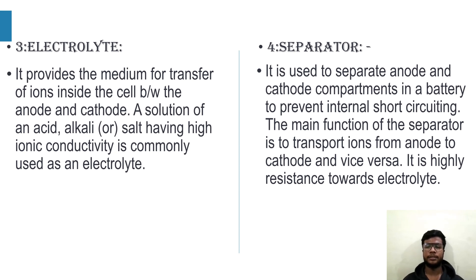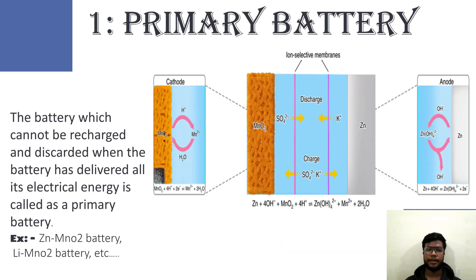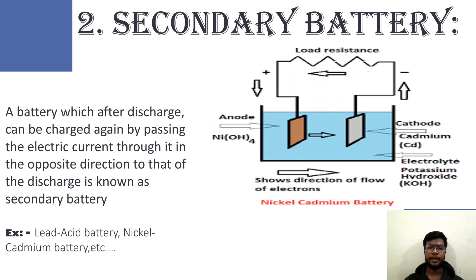It is highly resistant towards electrolyte. The types of batteries are primary batteries and secondary batteries. Primary battery: A battery which cannot be recharged — when the battery has delivered all its electrical energy, it is discarded. Examples include zinc manganese oxide battery and lithium manganese oxide battery. Secondary battery: A battery which, after discharge, can be charged again by passing electric current through it in the opposite direction of discharge. Examples include lead acid battery and nickel cadmium battery.